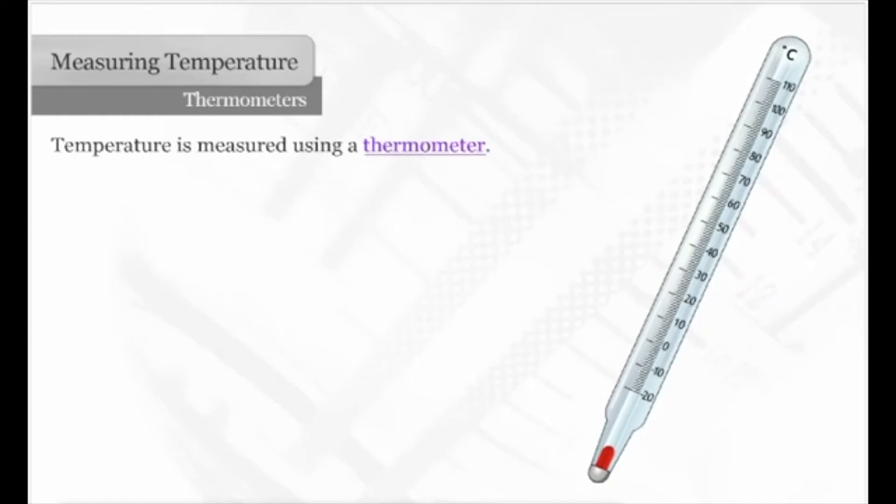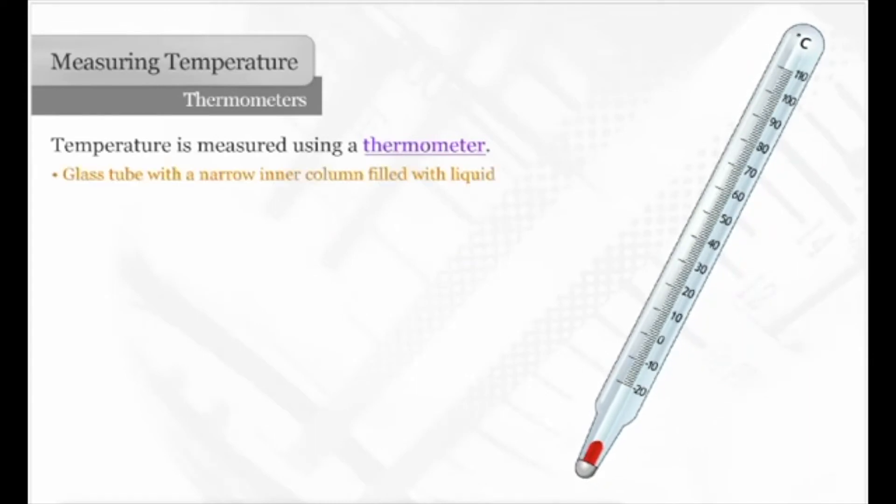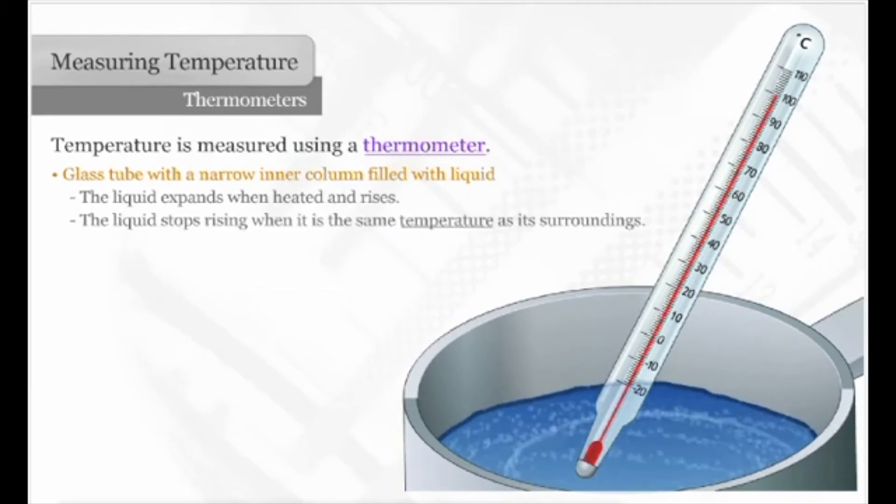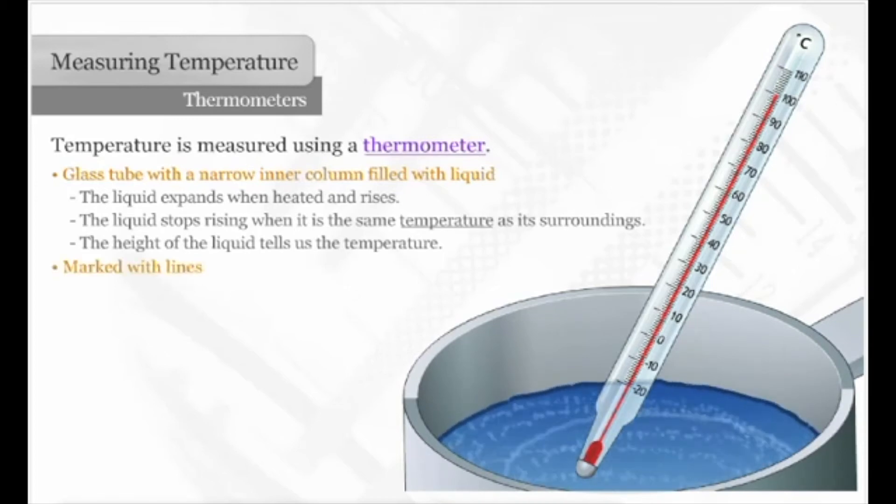Temperature is measured using a thermometer. A thermometer is a glass tube with a narrow inner column filled with colored liquid. The liquid expands when heated and rises up the inner column. It stops rising when it is the same temperature as its surroundings. The height of the liquid tells us the temperature of the substance. The outside of the thermometer is marked with lines. These lines are called the scale.